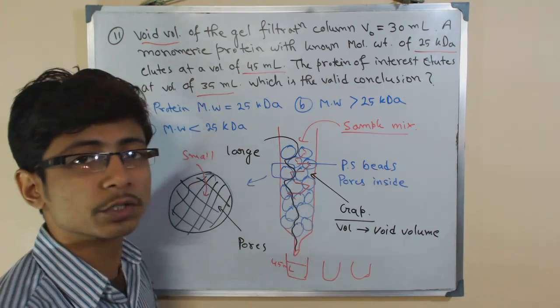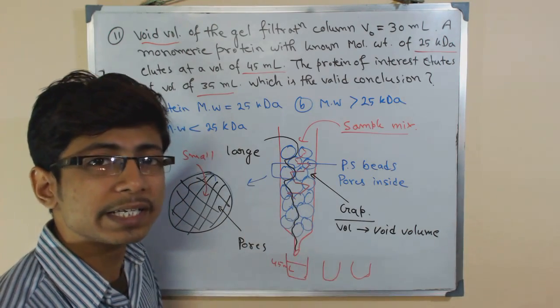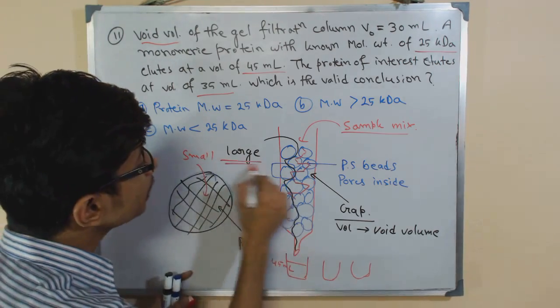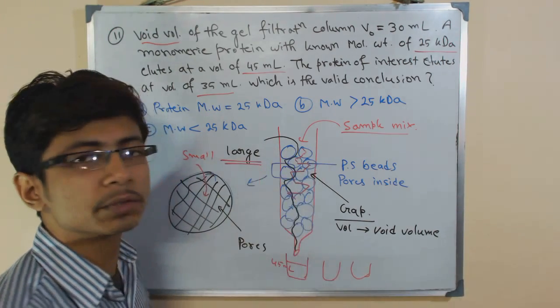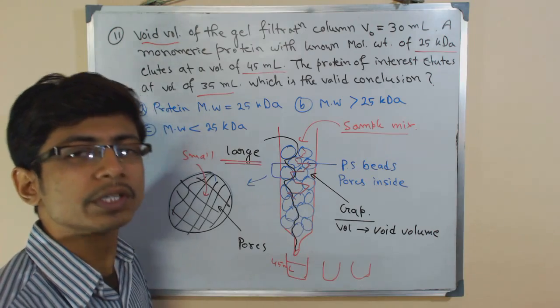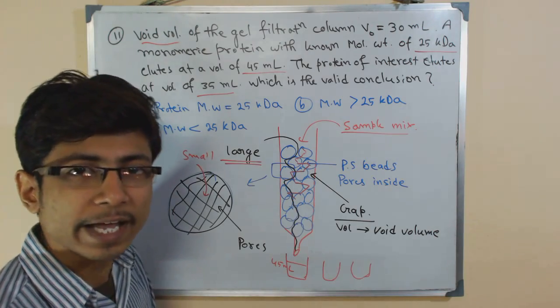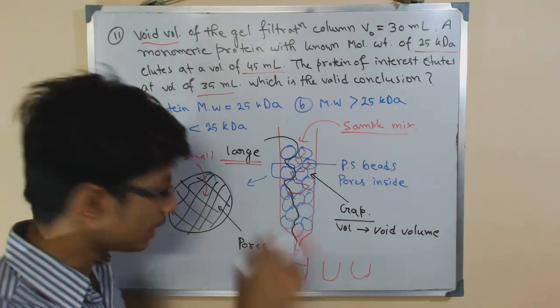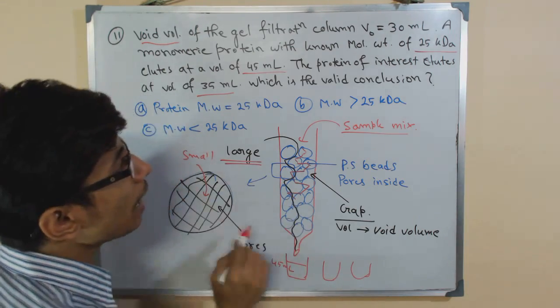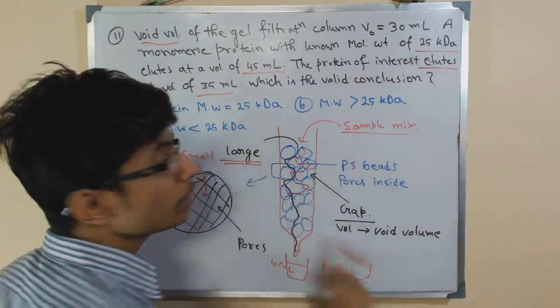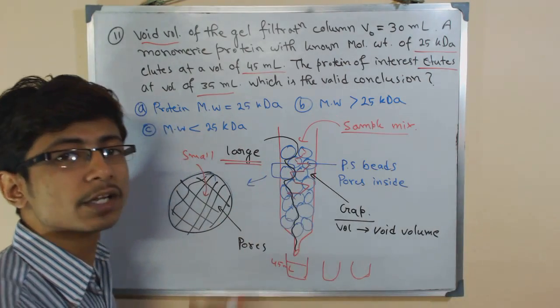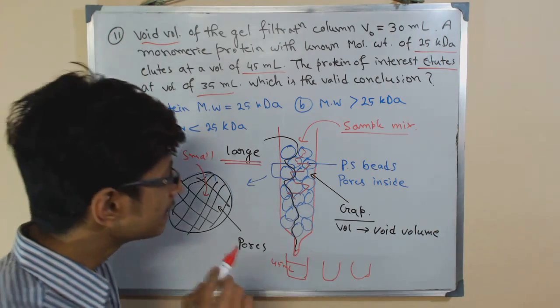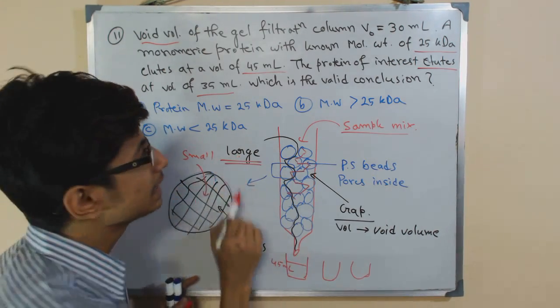Our protein comes earlier than this protein. In exclusion chromatography, which protein comes earlier - large or small? According to our knowledge, large proteins pass earlier because they won't enter into the carbohydrate beads, they won't enter into the pores formed by polysaccharide. They just pass through the small gaps inside and come out.